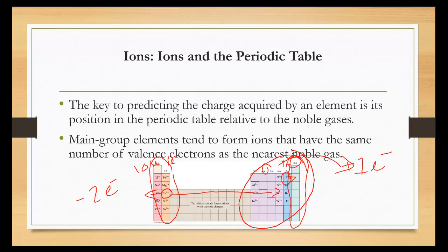So group 1A is usually a plus 1, group 2A is usually a plus 2, group 3A is usually a plus 3. Groups 4 and 5 look like they skip, although 5 could be a minus 3. Group 6 is a minus 2 because you gain two electrons, and group 7 — the halogens — could be a minus 1, because they only need to gain one electron.